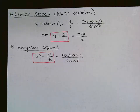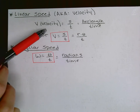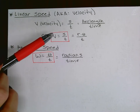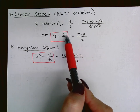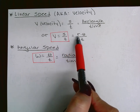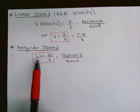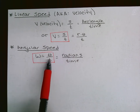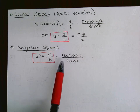The next slide gives two more formulas: linear speed and angular speed. Linear speed uses the formula V equals S over T — velocity equals arc length over time — the same formula you may know from physics. Since arc length S equals R times theta, you can also write V equals R times theta over T. Angular speed is W equals theta over T. Remember, theta is always in radians in these formulas.